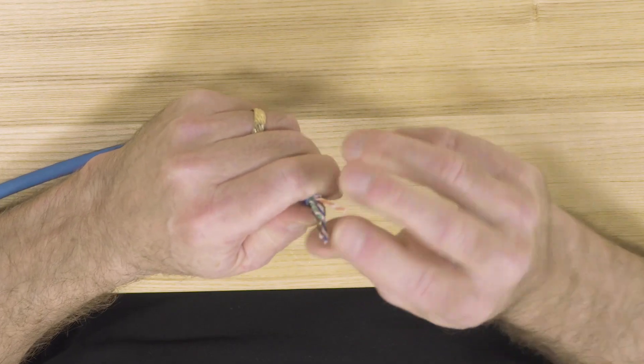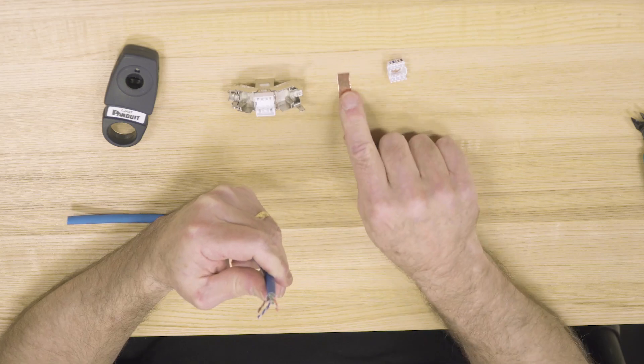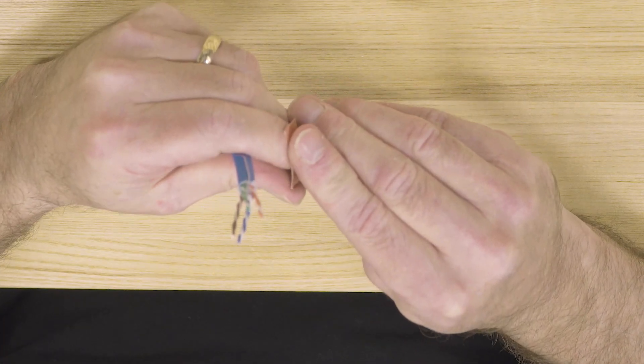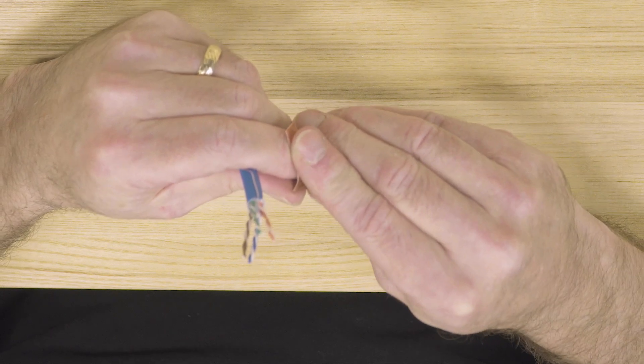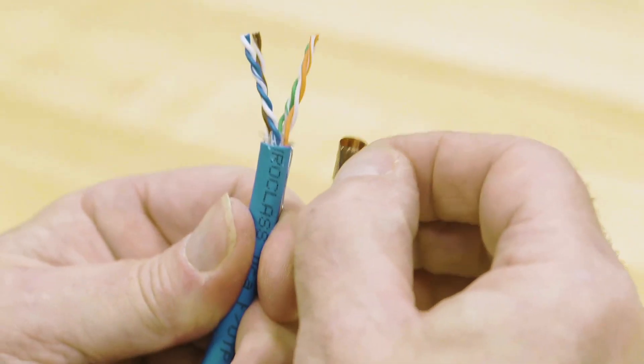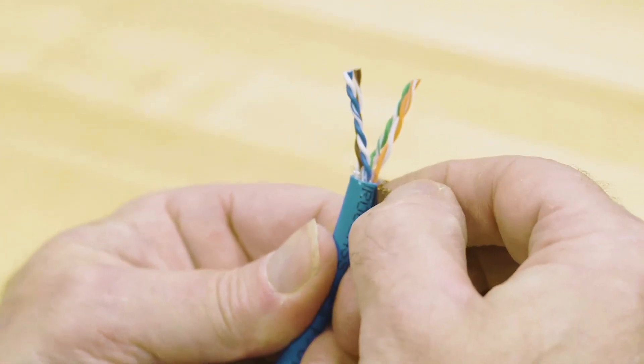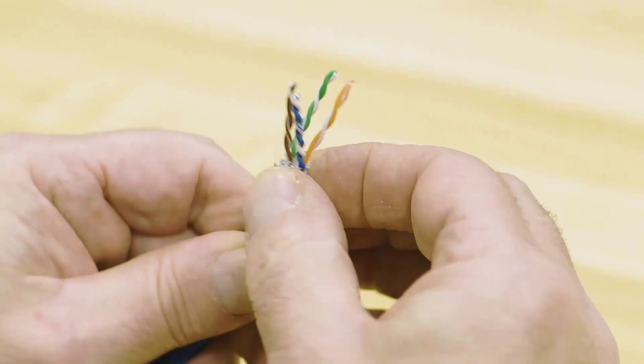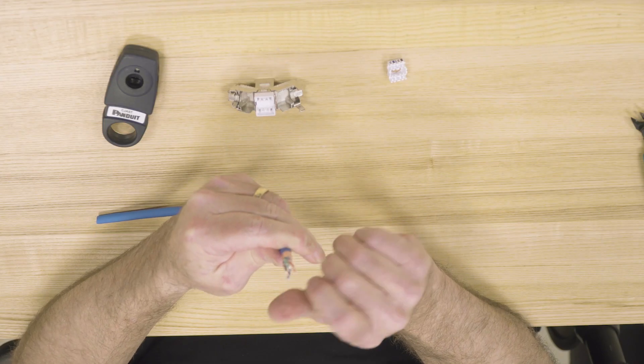Bring the conductors back up and take this copper strip that's been provided. Put that around the outer portion of the jacket, making sure to include and cover that drain wire. That'll cause a nice secure bond right there.